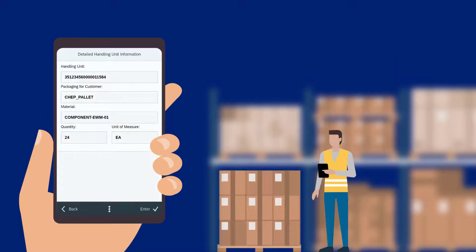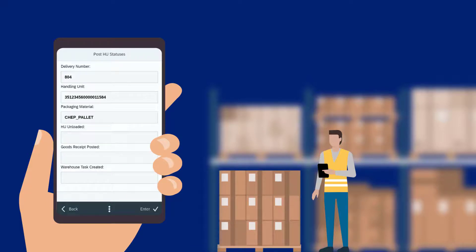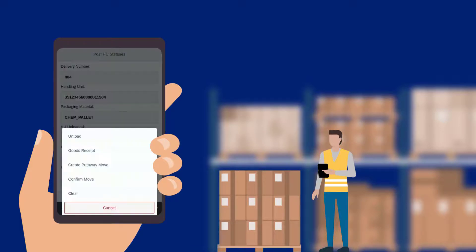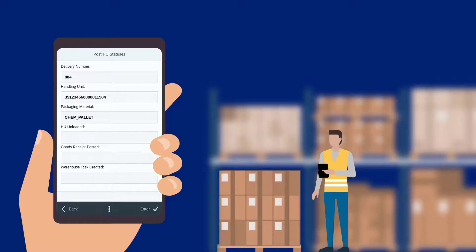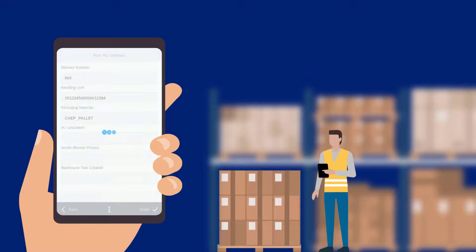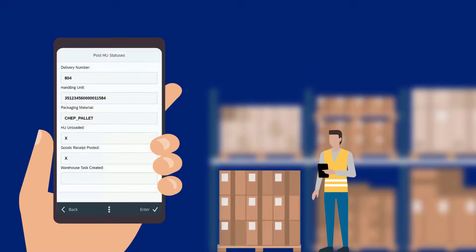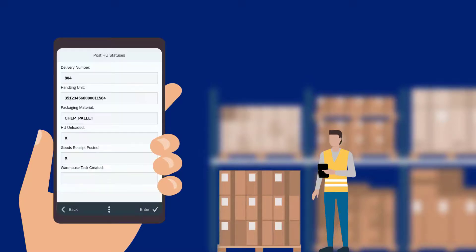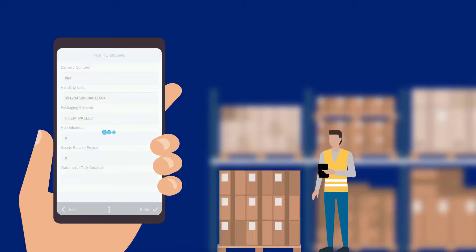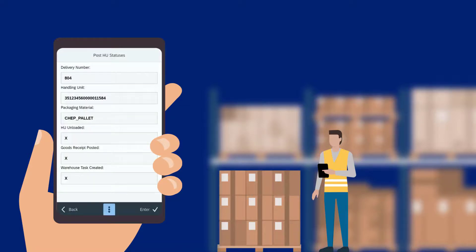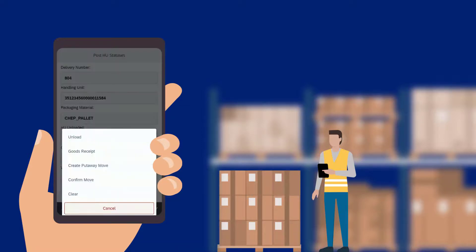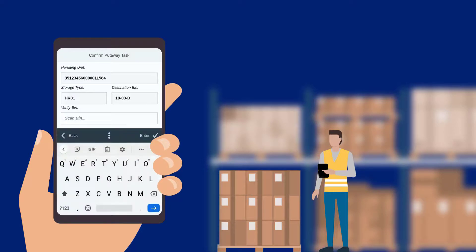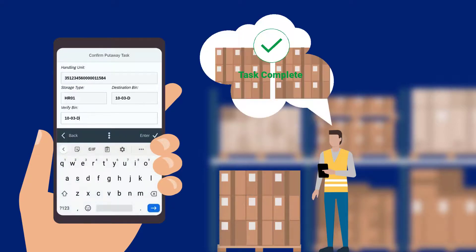Now that the order is ready to be goods receipted and put away, they then select the goods receipt and click on create put away move. The operator then proceeds to drive to the end product destination and lastly selects confirm move. They scan the bin to verify, which completes the process.